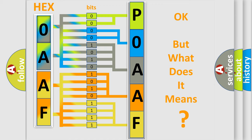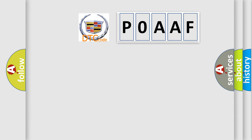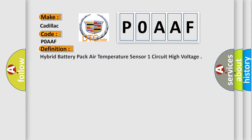The number itself does not make sense to us if we cannot assign information about what it actually expresses. So, what does the diagnostic trouble code P0AAF interpret specifically for Cadillac car manufacturers? The basic definition is: Hybrid battery pack air temperature sensor one circuit high voltage.